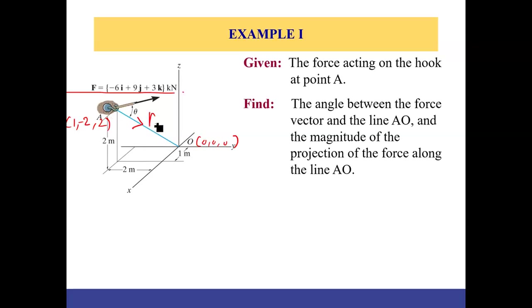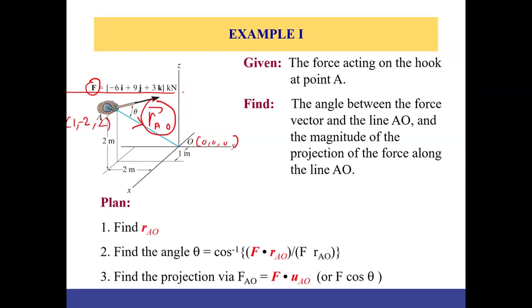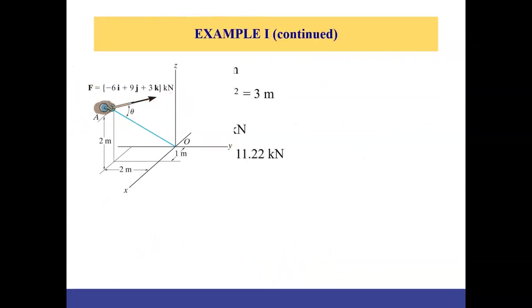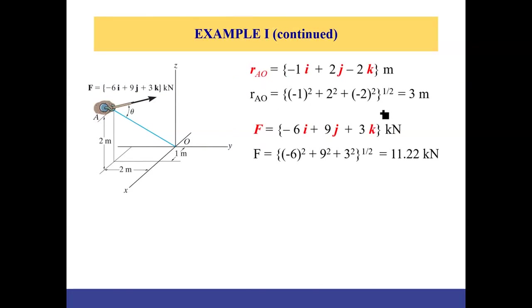Using the coordinates of A and O, we write the position vector from A to O. Then we find the angle between them using the dot product of the force vector and the position vector. For dot product, it is not necessary for both vectors to have the same magnitude — you can take the dot product between a force vector and a position vector to calculate the angle.